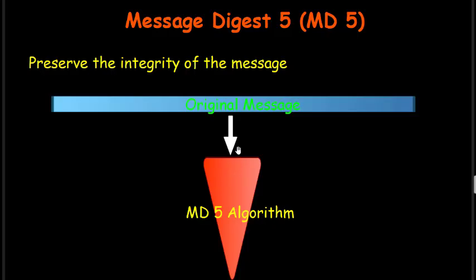Hello everyone, welcome to the network security algorithm series. Today we're doing the algorithm Message Digest 5, also called MD5. The main aim of this algorithm is to preserve the integrity of the message. If we are sending any message, it might happen that an attacker may change the content, add something, or remove something. If an attacker does that, the receiver must know there is a change and can discard the message. This is done using MD5.